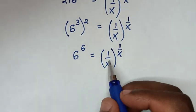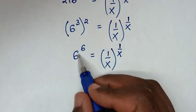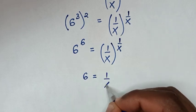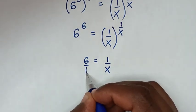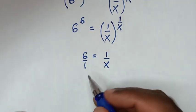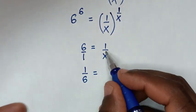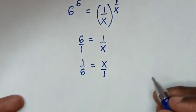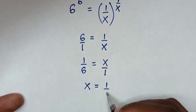Now we compare the base and the power. Since (1/x)^(1/x) = 6^6, we get that the base 1/x = 6 and the power 1/x = 6. Therefore 6 = 1/x, which is the same as 6 over 1. Taking the reciprocal of both sides, 1/6 = x.